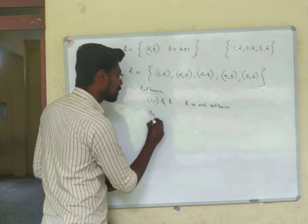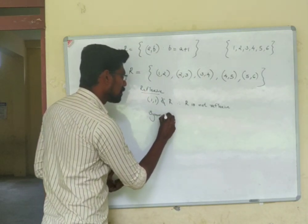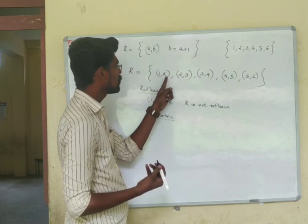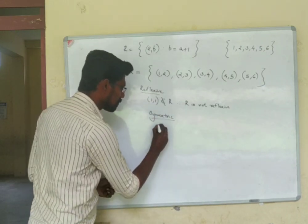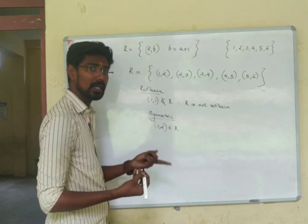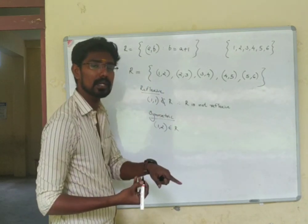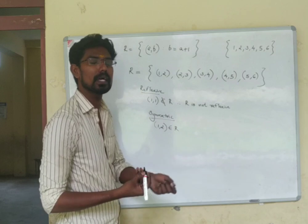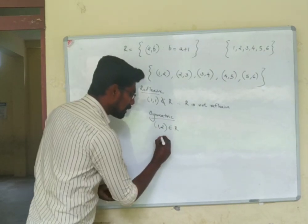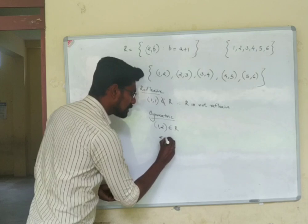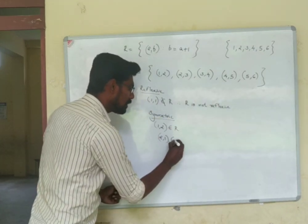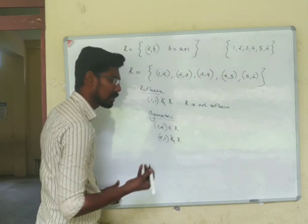For symmetry: (1,2) is an element of R since 2 = 1+1. But (2,1) is not an element of R since 1 ≠ 2+1. So R is not symmetric.